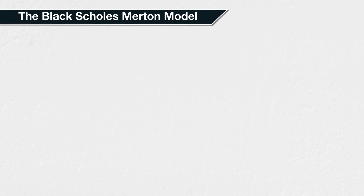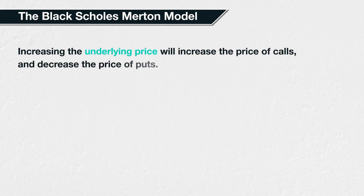Any change to these input parameters will of course lead to a change in the option price outputs. Assuming all other parameters are left the same, increasing the underlying price will increase the price of call options and decrease the price of put options. With a higher underlying price, a right to buy the asset at a fixed price will logically have more value, and a right to sell the asset will have less value.